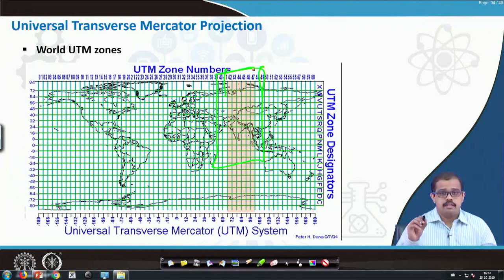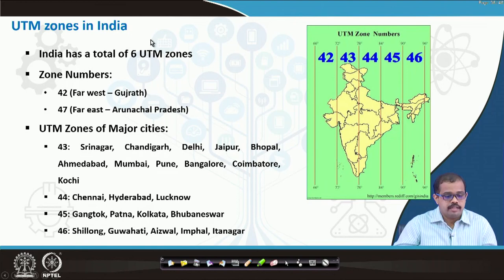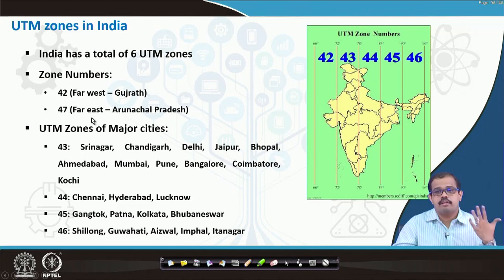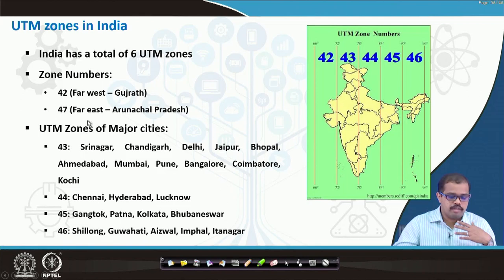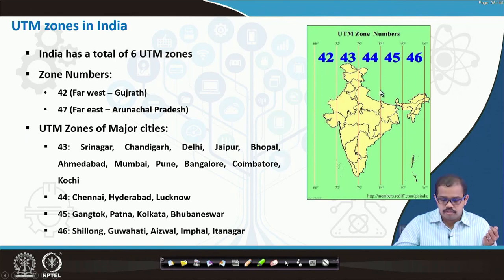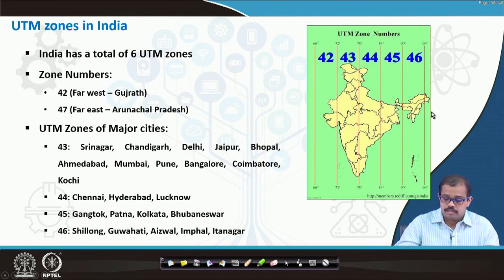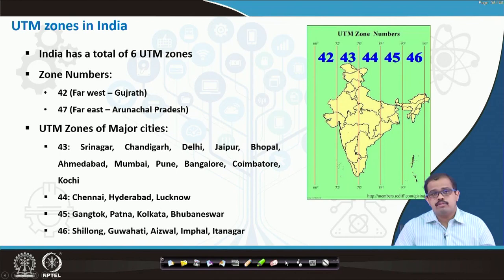When looking at the Indian part, the Indian subcontinent has a total of 6 UTM zones. Each zone — zone 42 is the far west for Gujarat and zone 47 is the far east for Arunachal Pradesh. When you look at certain major cities that fall in different zones: zone 43 includes Srinagar, Chandigarh, Delhi, Jaipur, and Bhopal. Zone 44 includes major cities like Chennai and Hyderabad. Zone 45 is further east, and the last part of the eastern zone lies in 46 and some part in 47. The major part of Gujarat falls in the 42nd zone with some part in the 43rd zone.